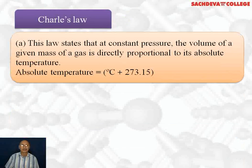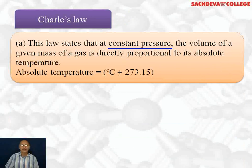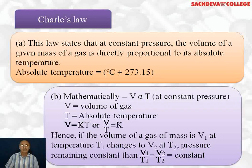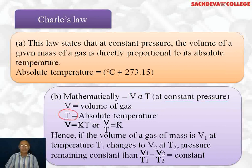Next we are taking Charles's law. This law states that at constant pressure, the volume of a fixed mass of a gas is directly proportional to its absolute temperature. Be careful — it is absolute temperature, not temperature in centigrade. Absolute temperature is temperature in centigrade plus 273.15, giving temperature in Kelvin. Mathematically, V is directly proportional to T, so V = constant × T, or V/T = constant.